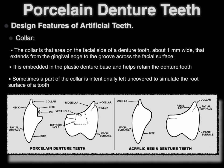The design features of porcelain teeth differ from acrylic resin teeth. The collar is that area on the facial side of the denture tooth, about one millimeter wide, that extends from the gingival edge of the groove across the facial surface. It is embedded in the plastic denture base, remaining underneath it to help with retention. Sometimes a part of the collar is intentionally left uncovered to simulate some root surface or recession.